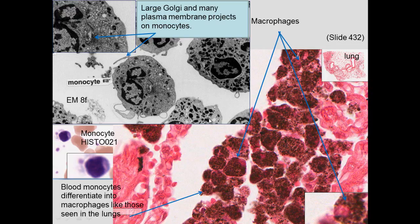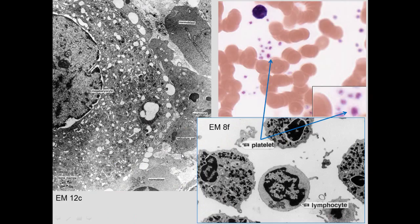The monocyte is one of the largest cells in blood, with horseshoe-shaped cytoplasm. It exits the bloodstream and becomes a macrophage. Macrophages are visible in the lungs as dust cells collecting debris — possibly from a smoker's lung. Electron microscopy of monocytes shows pseudopodia and a Golgi apparatus, also visible at the light microscopic level.